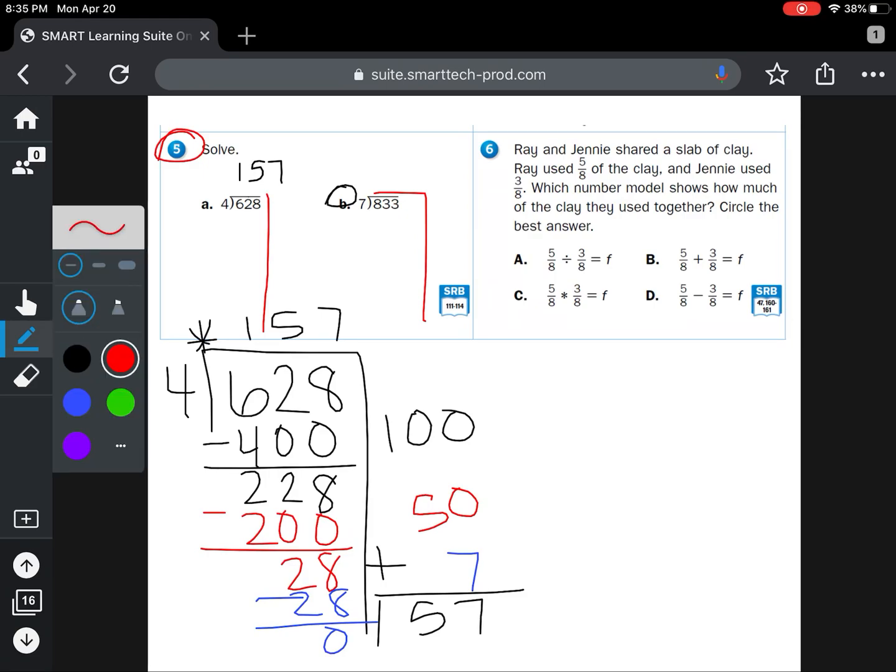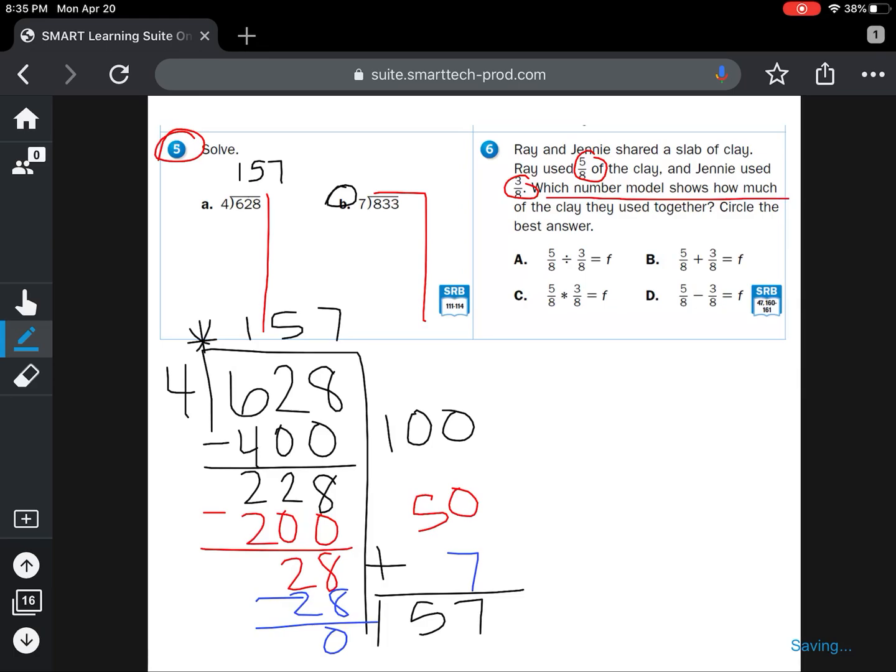Well, if I'm using my cube strategy, I'm going to circle 5 eighths of the clay. That's what Ray used. Then 3 eighths of the clay to represent how much Jenny used. They ask you, which number model shows how much of the clay they used together? That used together tells me I am probably going to be what? Think about what together means.